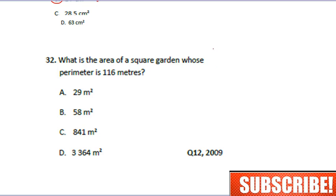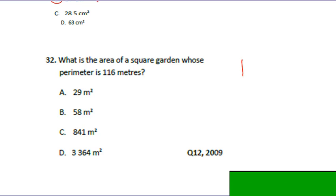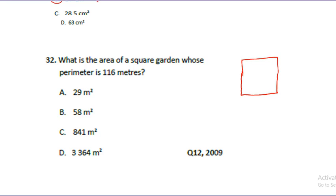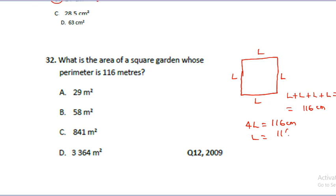The next question asks: what is the area of a square garden whose perimeter is 116 meters? Remember, each side of a square is equal, so the formula for perimeter is L plus L plus L plus L, which equals 4L. Setting 4L equal to 116, we get L equals 116 divided by 4, which gives us 29 meters.